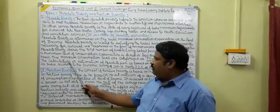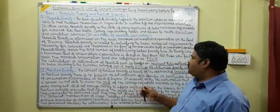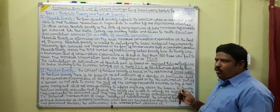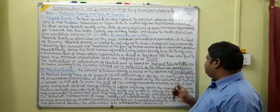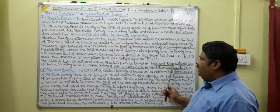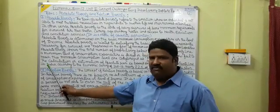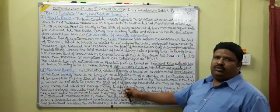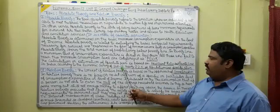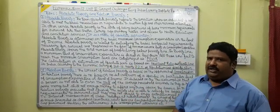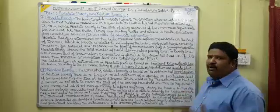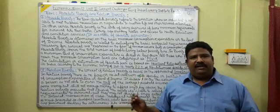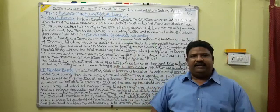The calculation of absolute poor is based on head count ratio and poverty line. People who are not able to attain this poverty line are counted in the head count ratio. In India, according to the Economic Survey 2011-12, nearly 22% of the total population was absolutely poor - meaning 22% of India's people were below the poverty line according to the absolute poverty approach.